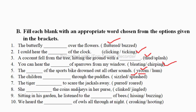The tiger dashed to scare the jackals away — purr or roared? Purr is the sound made by a cat, but the tiger roared. She dashed the coins and keys in her purse — clink or jingle? Clink is a sharp ringing sound made by striking metal or glass, whereas jingle is a light ringing sound made by metal objects being shaken together. So the correct answer is jingle, because when we shake coins together it makes a jingle sound. Sitting in his garden, he listened to the dash of bees — hissing or buzzing? Hissing is made by the snake, so it's wrong. The buzzing of the bees is the correct answer.